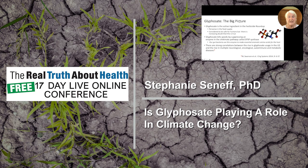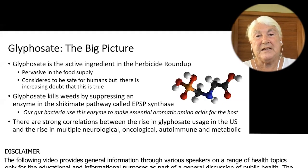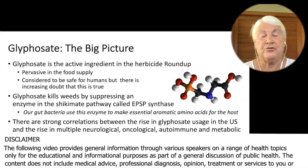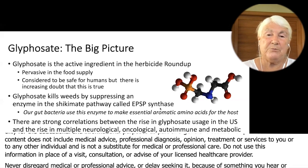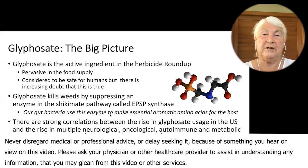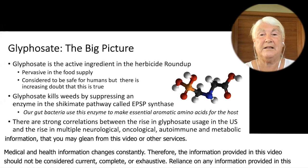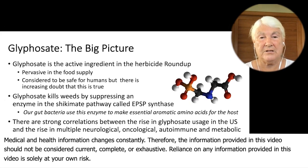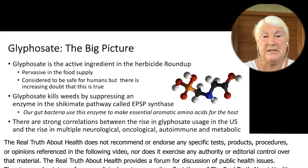I want to start by introducing glyphosate. It's the active ingredient in the herbicide Roundup, which is pervasive in our food supply. People use it in their yards. It's considered to be safe for humans, but there's increasing doubt that this is true. Glyphosate kills weeds by suppressing an enzyme in the shikimate pathway called EPSP synthase, and our gut bacteria use this enzyme to make essential aromatic amino acids for the host. The gut bacteria get harmed by glyphosate, causing gut dysbiosis, which is a major underlying problem associated with many modern diseases.